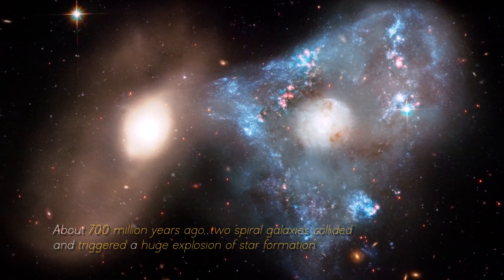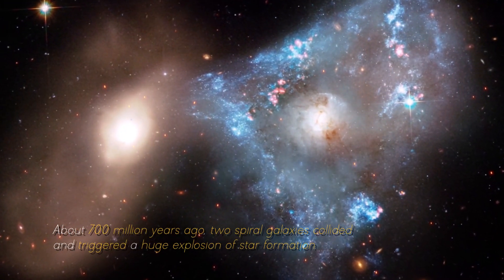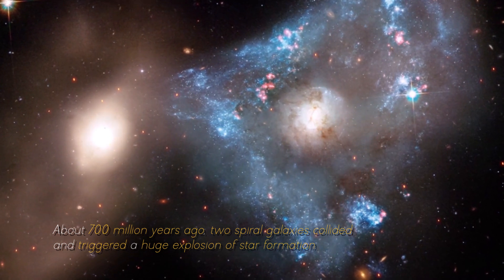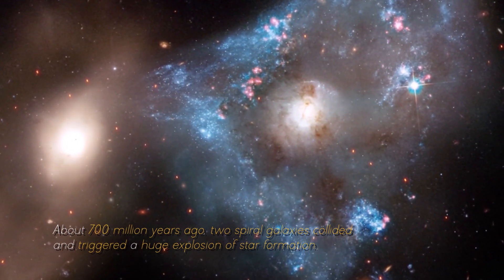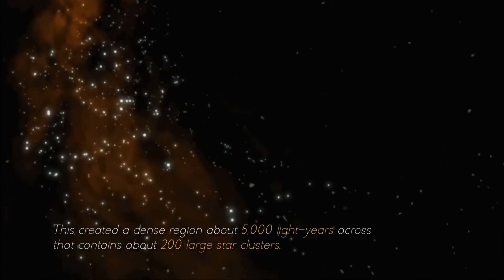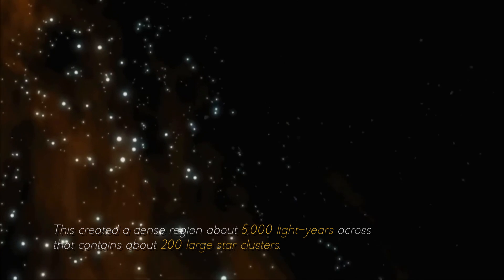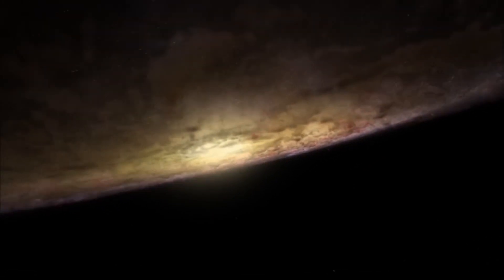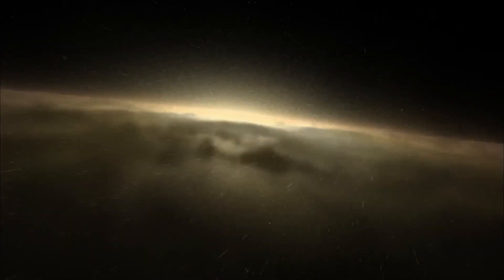About 700 million years ago, two spiral galaxies collided and triggered a huge explosion of star formation. This created a dense region about 5,000 light years across that contains about 200 large star clusters. Surprisingly, this small area contains as much gas as the entire Milky Way.